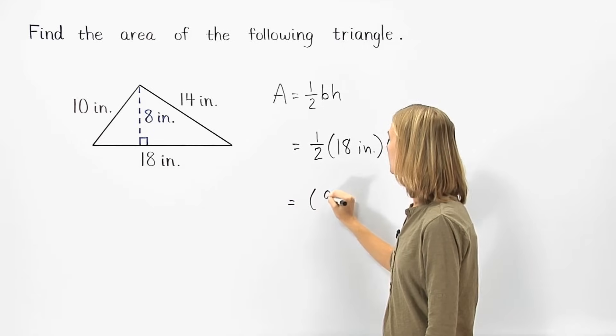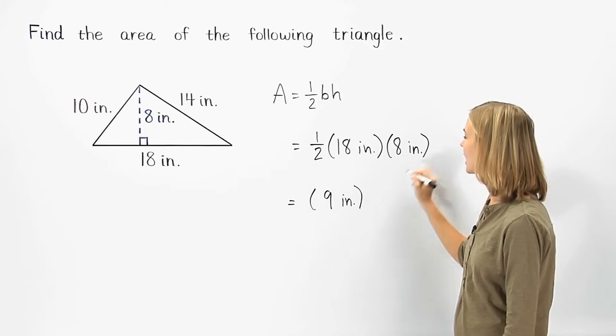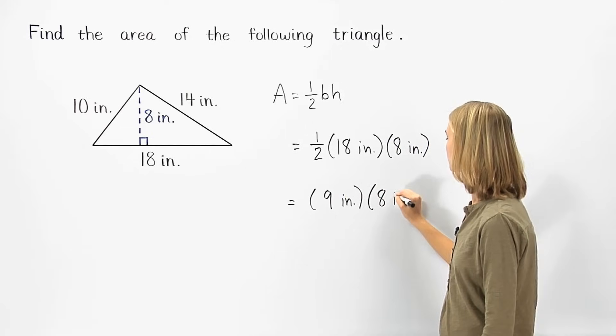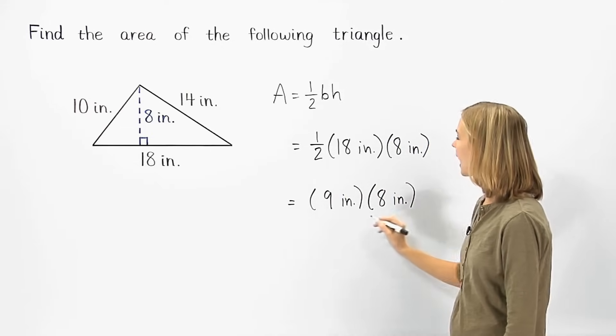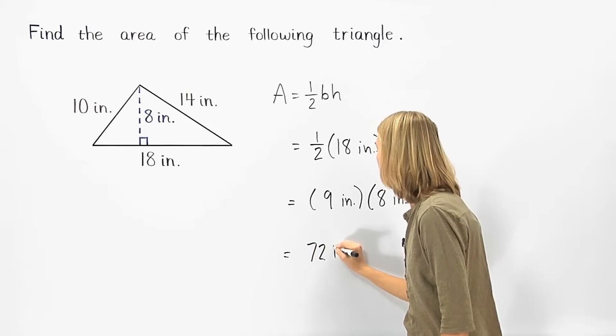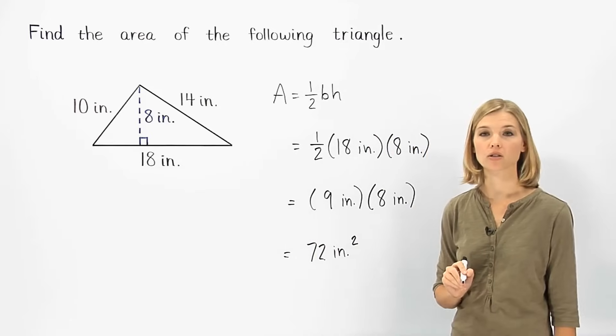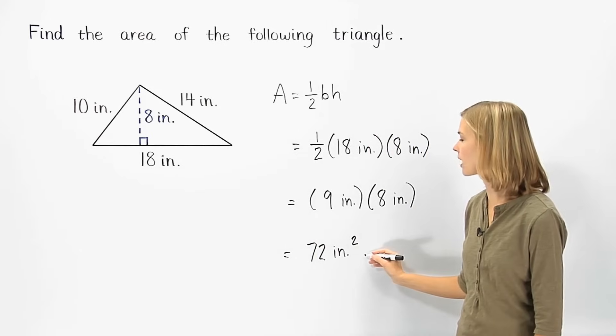To get 9 inches, then multiply by 8 inches. And 9 inches times 8 inches is 72 inches squared. So the area of the triangle shown is 72 square inches.